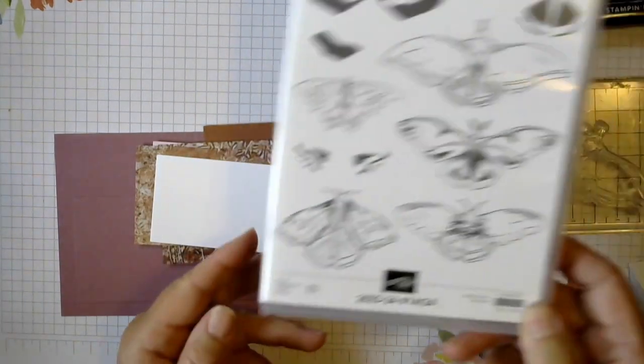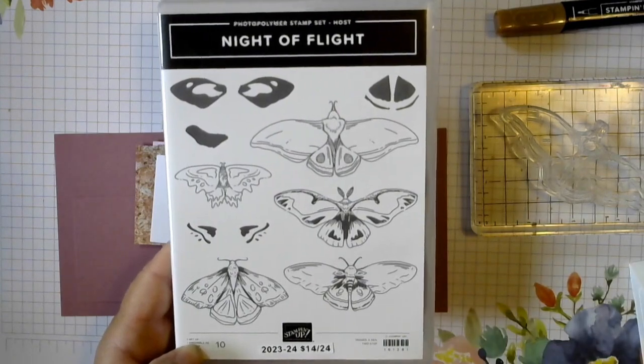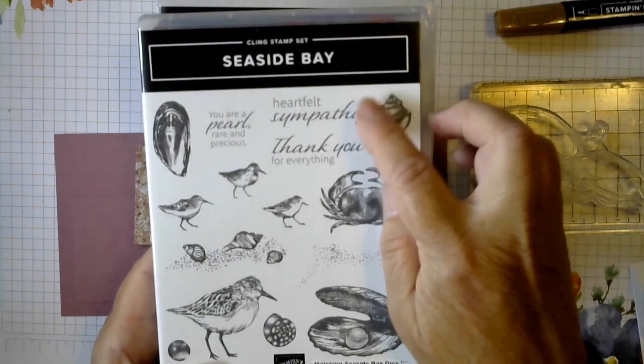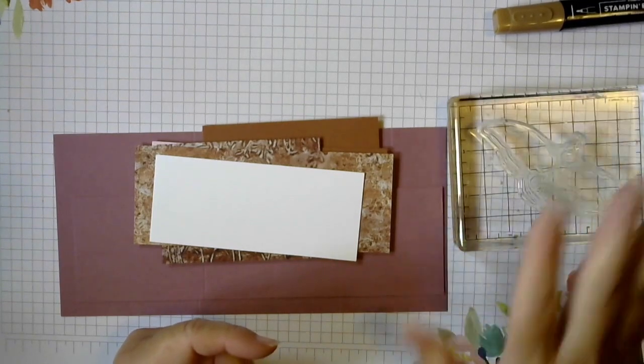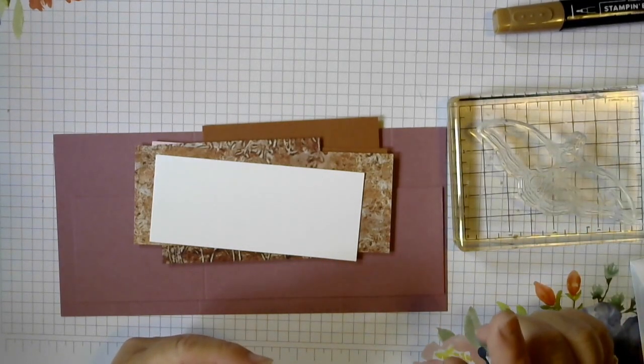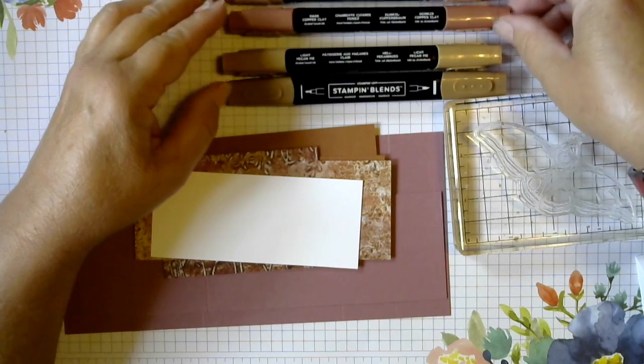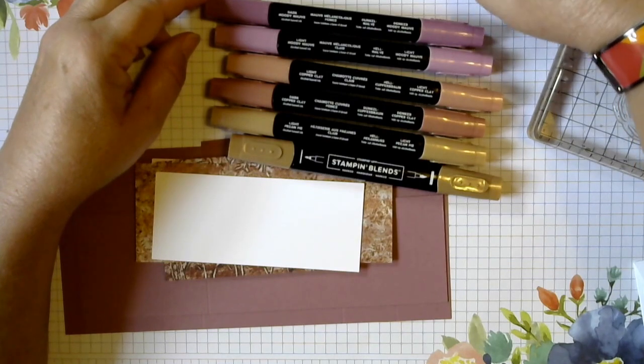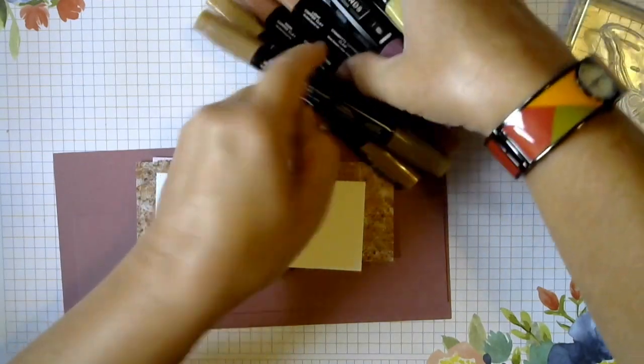We also need a piece of Basic White to stamp our moth on, and this is just a scrap that was big enough for the moth that I've chosen. So I'm doing this moth. We're using two different stamp sets because the Night of Flight doesn't have any words on it, and I'm also using the greeting Heartfelt Sympathy from the Seaside Bay. We're going to be coloring the moth with Stampin' Blends. I'm not quite sure yet which colors we're going to use, but I've chosen a few here: the Pecan Pie, the Copper Clay, the Moody Mauve, and then I'm not sure if we're going to use the Wild Wheat, but I've got that pulled in here too in case we need a lighter color somewhere.